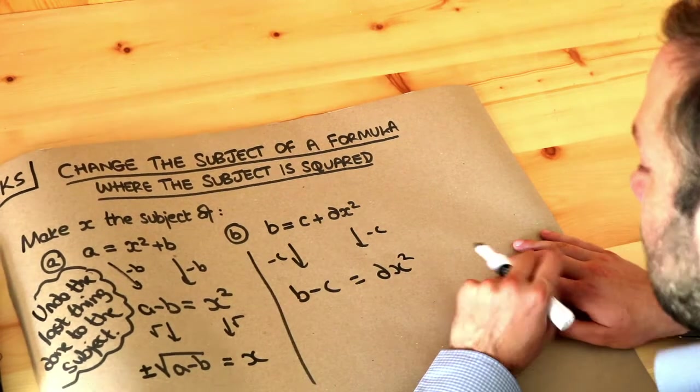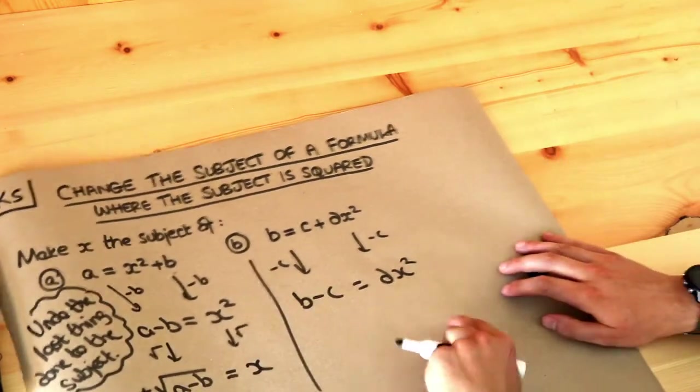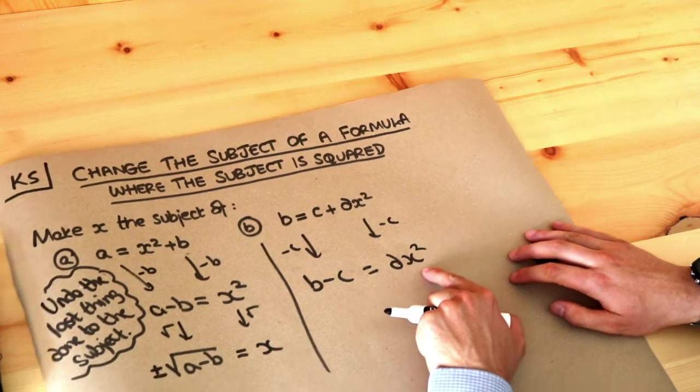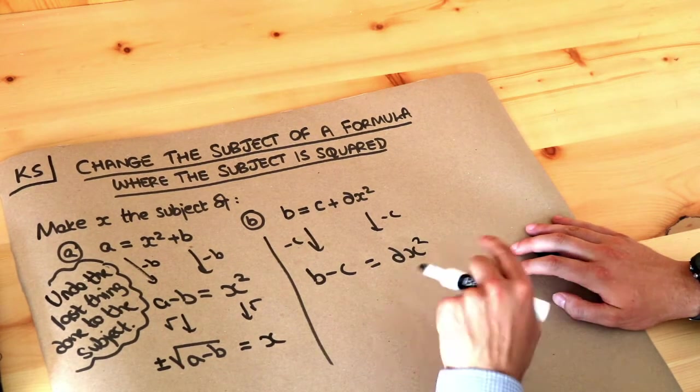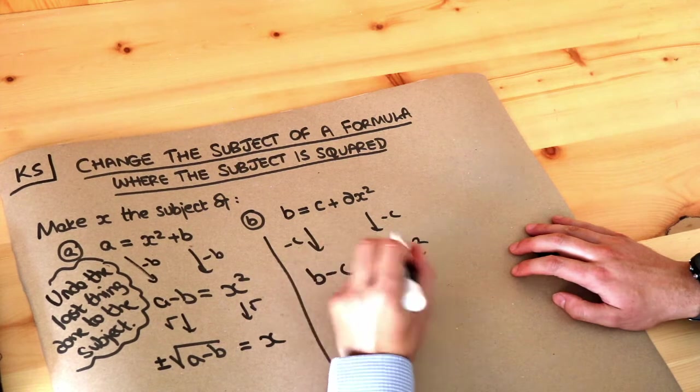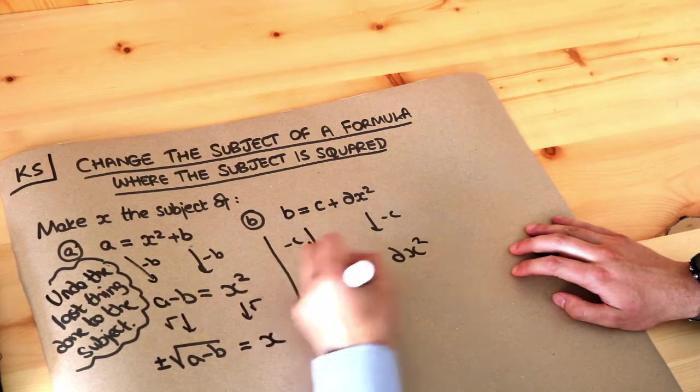Now let's think of what's happening to x here, and we're going to apply this step again. x is being squared, and then we're timesing it by d, so we've got to undo that times by d first by dividing by d.